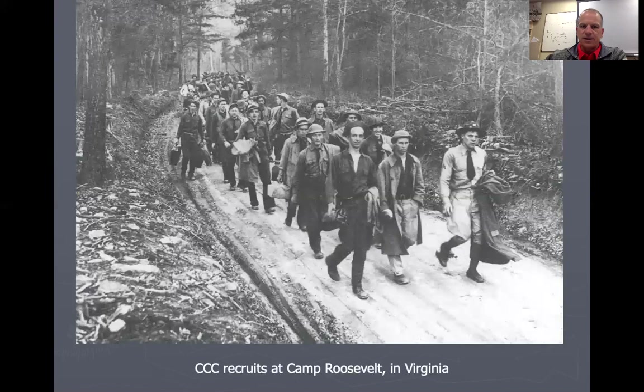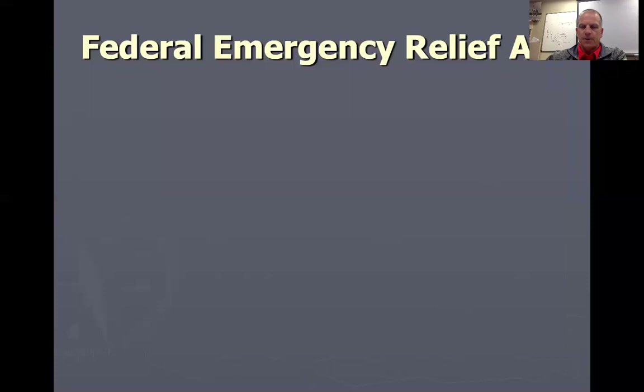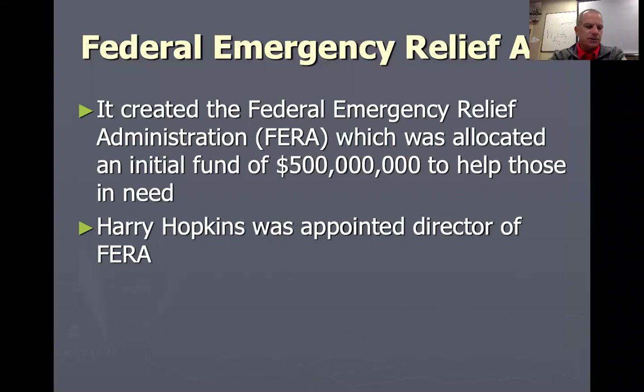Here's a picture of CCC recruits in Camp Roosevelt in Virginia, and another at Glacier National Park, and a group in Des Moines, Iowa — uniformed and disciplined, working hard to make things better. Did we really need trails and all that? No. But did it provide jobs? Yes. Much like what Hoover did with Hoover Dam.